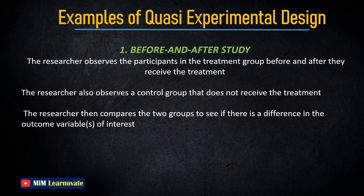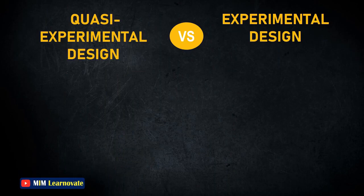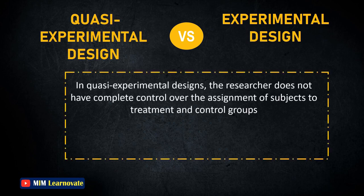Another example of a Quasi-Experimental Design is an Interrupted Time Series Design. This type of design is similar to experimental design, but there is one key difference: in quasi-experimental designs, the researcher does not have complete control over the assignment of subjects to treatment and control groups.